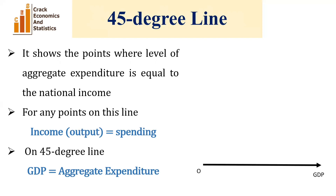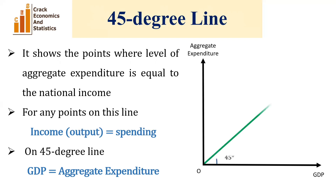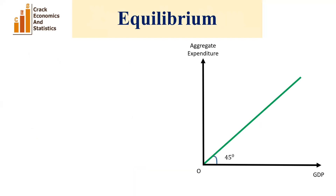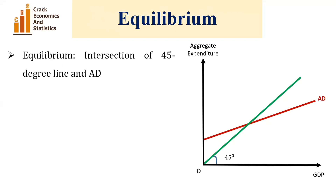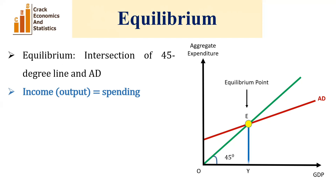Let's understand this with the help of an example. We have GDP on the x-axis and aggregate expenditure on the y-axis. This is the 45-degree line, and here we have the aggregate demand curve AD. The equilibrium is where these two lines — the 45-degree line and the aggregate demand curve — intersect each other, and at that point income is equal to spending. So E is our equilibrium point and OY is the equilibrium level of income.